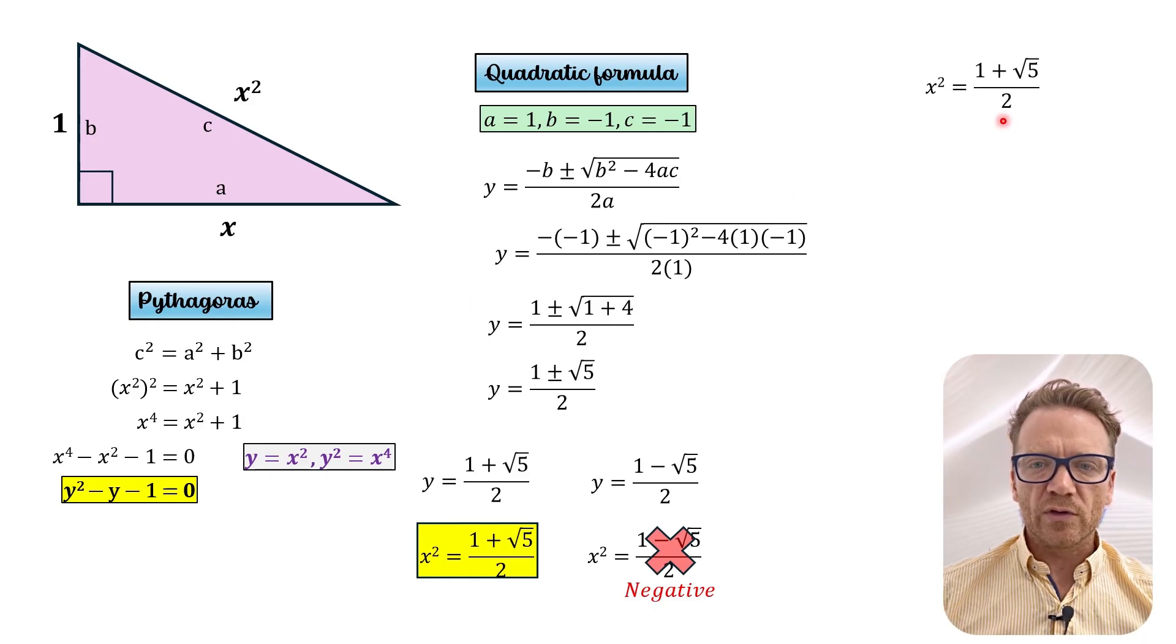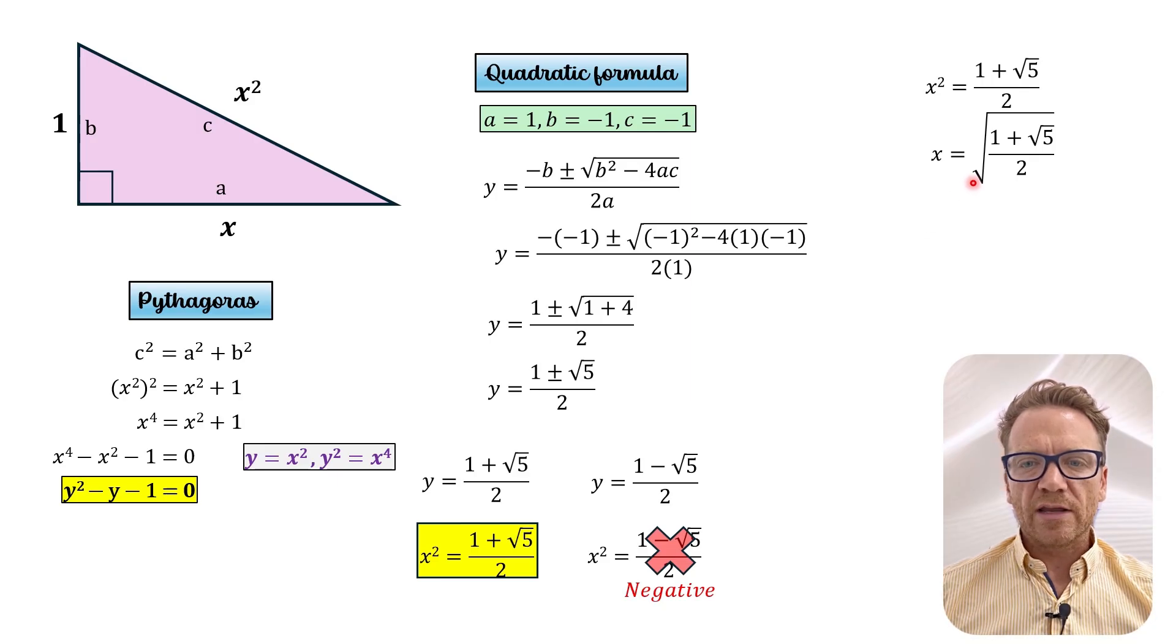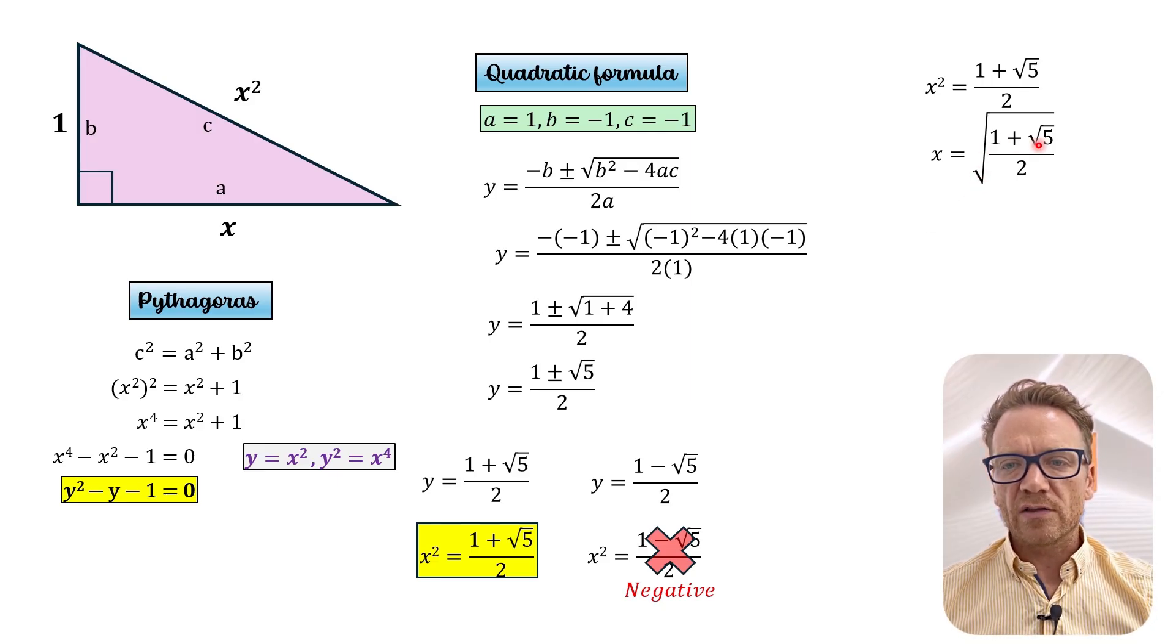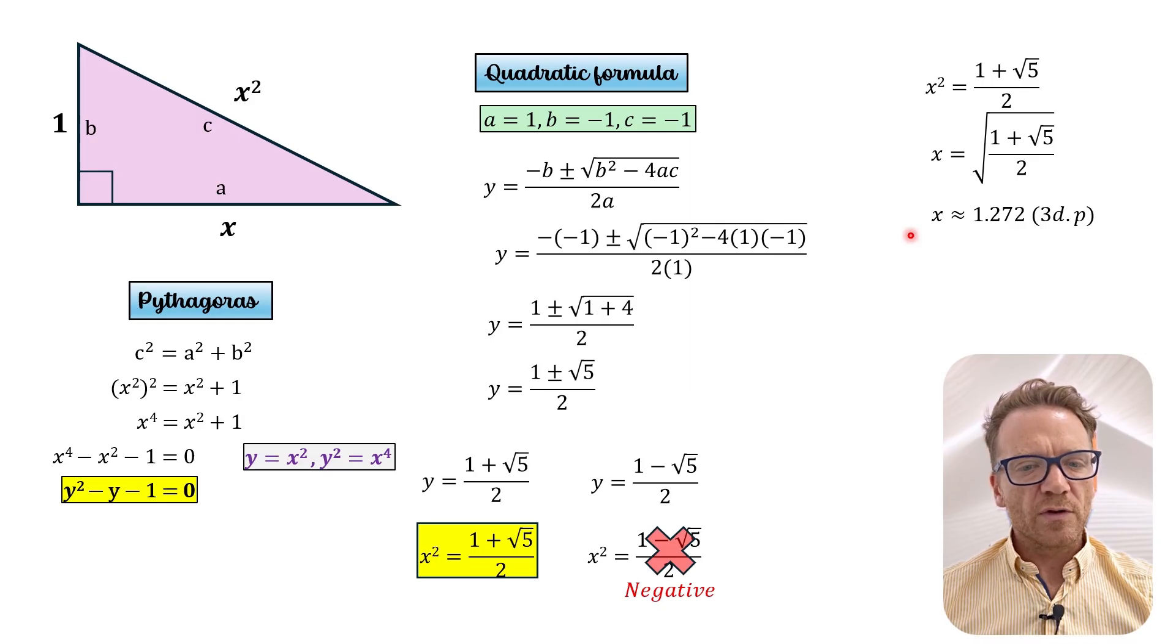And now what we can do is we can actually find x by taking the square root of both sides. And so what we find out is that x is equal to the square root of 1 plus square root 5 over 2. And as a value that is approximately 1.272 to 3 decimal places.